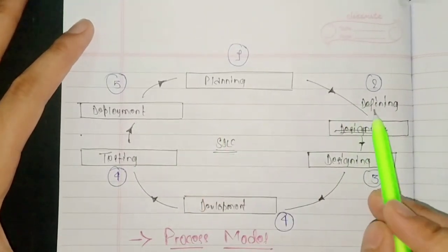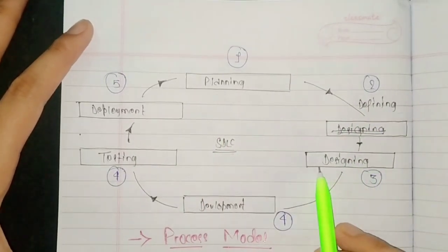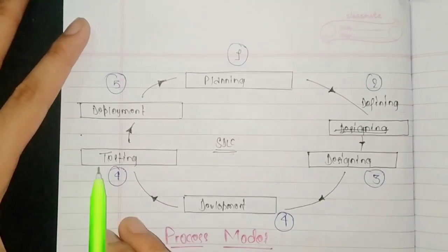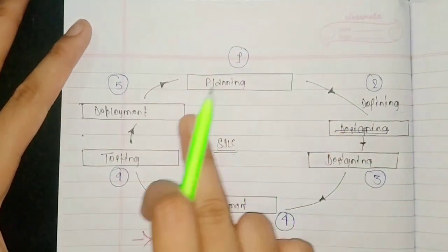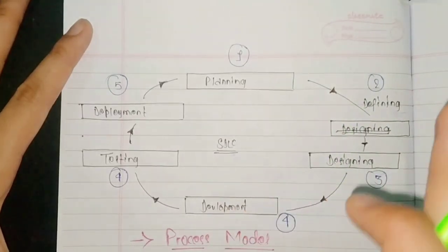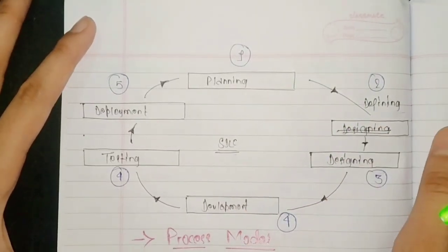Planning, Defining, then we have to go to Designing, Development, Testing and Deployment. These are the five steps that have to be followed in the software development life cycle. Okay? Thank you.